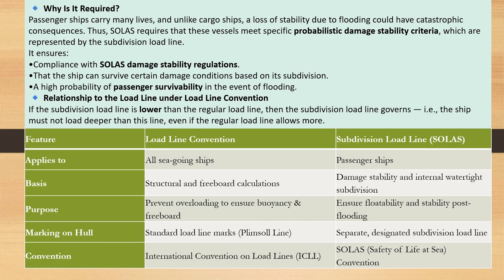Passenger ships carry many lives, and unlike cargo ships, a loss of stability due to flooding could have catastrophic consequences. Thus, SOLAS requires that these vessels meet specific probabilistic damage stability criteria, which are represented by the subdivision load line. It ensures compliance with SOLAS damage stability regulations, that the ship can survive certain damage conditions based on its subdivision, and a high probability of passenger survivability in the event of flooding.